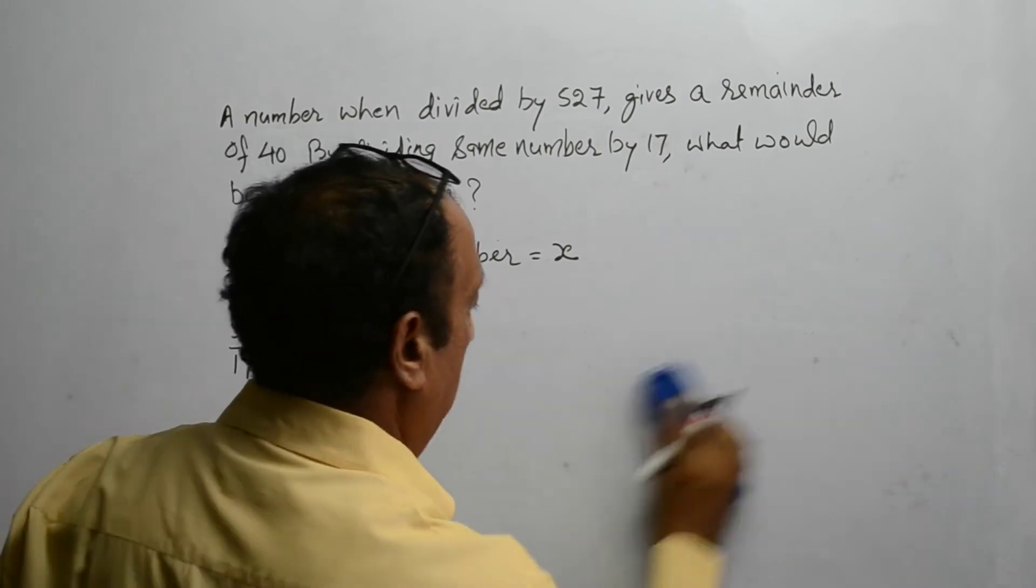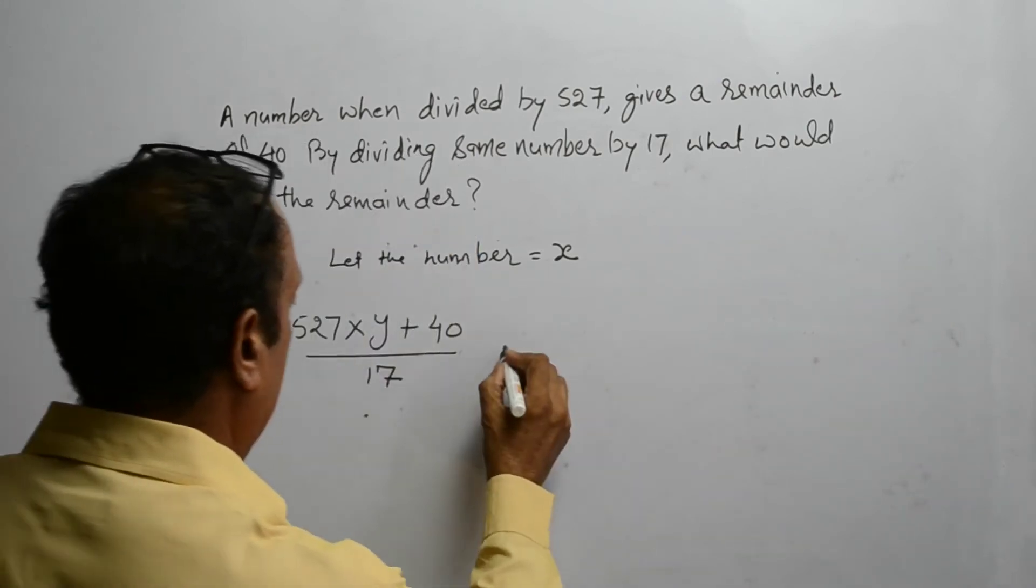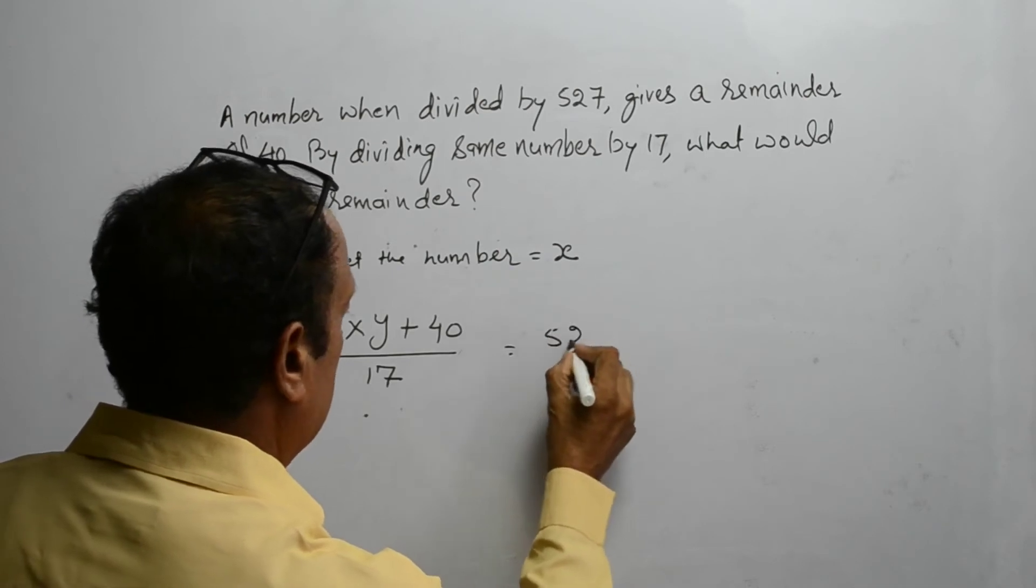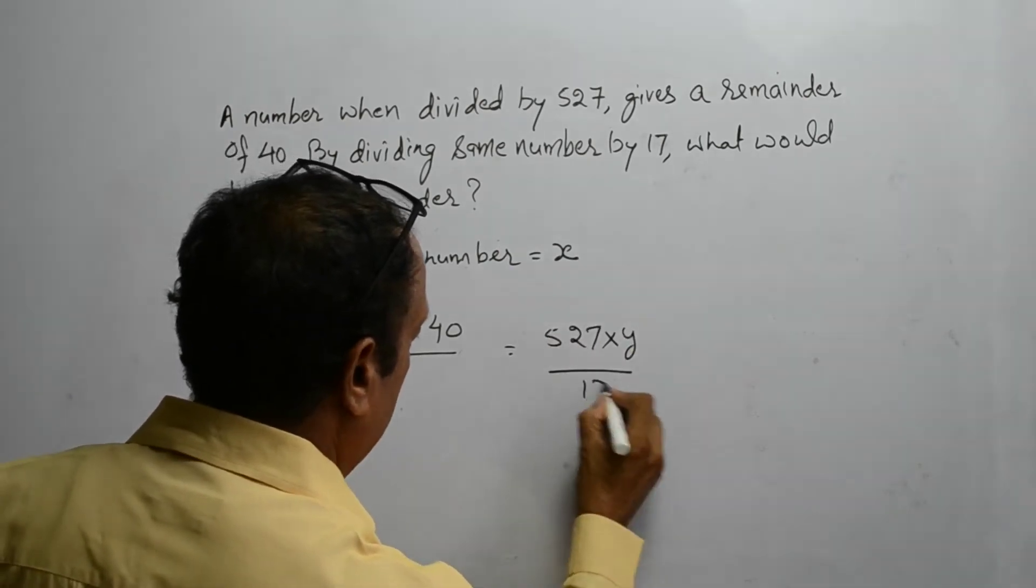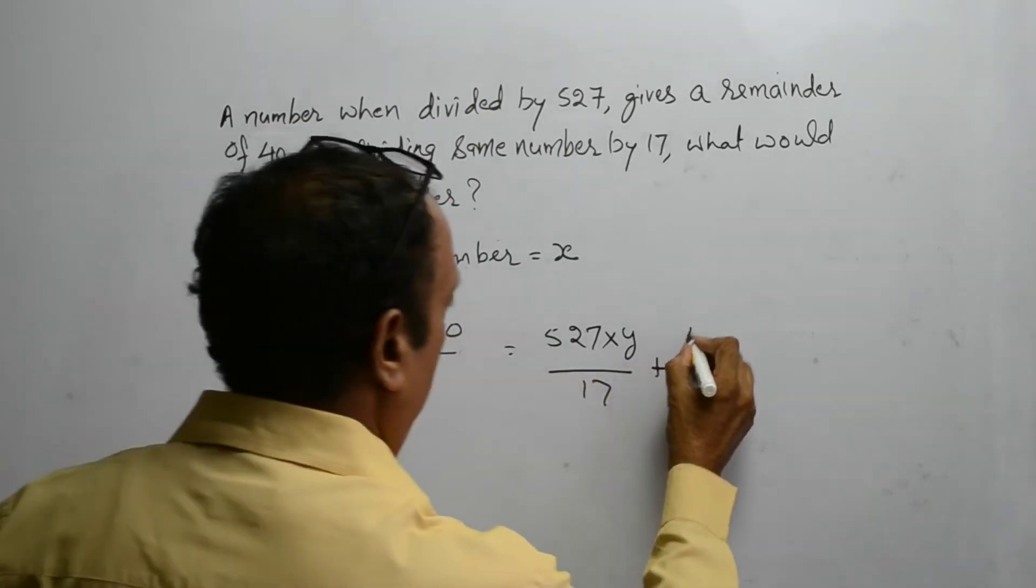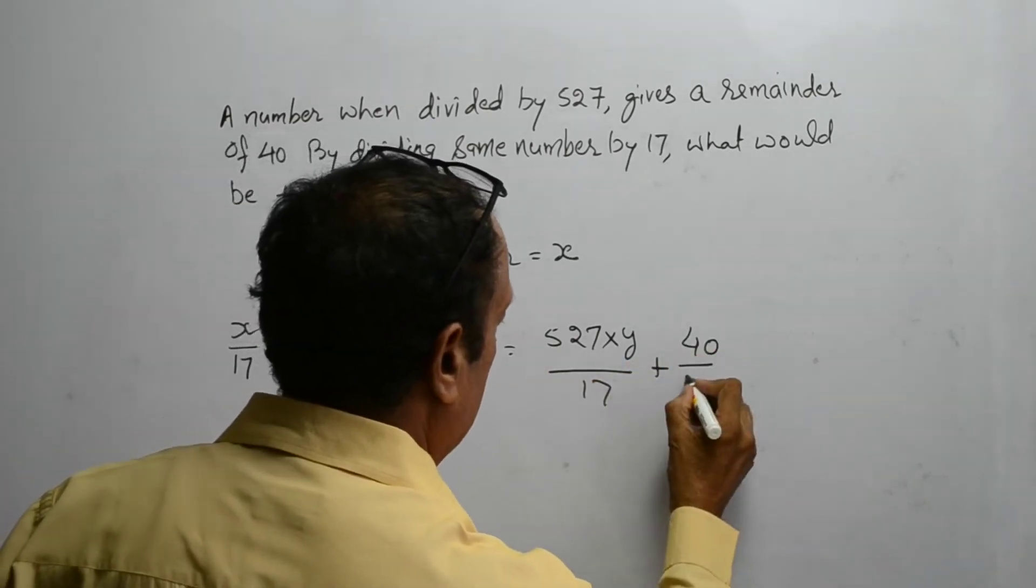We get 527 multiplied by y upon 17 plus 40 upon 17.